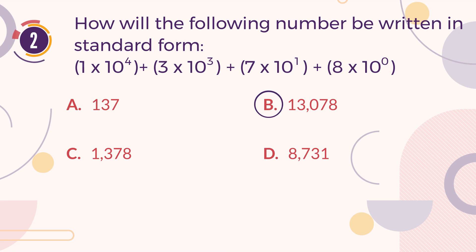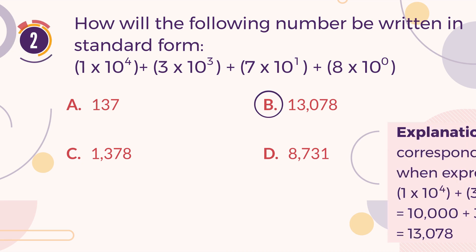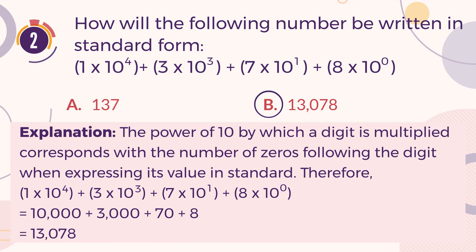The correct answer is B. 13,078. Explanation. The power of 10 by which a digit is multiplied corresponds with the number of zeros following the digit when expressing its value in standard form. Therefore, the expression equals 10,000 plus 3,000 plus 70 plus 8, giving the final result of 13,078.